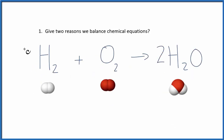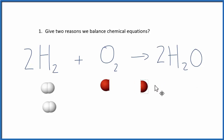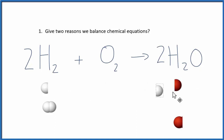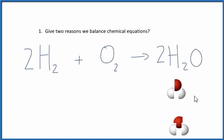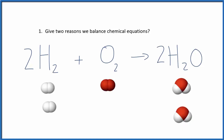Let's balance the equation to obey the law of conservation of mass. I'll put a two here as a coefficient, and then a two here. So now I have 2×2=4 hydrogens, 2×2=4 hydrogens, two oxygens, and 1×2=2 oxygens — it's balanced. We had two molecules of hydrogen plus one molecule of oxygen, and we get two molecules of H2O.